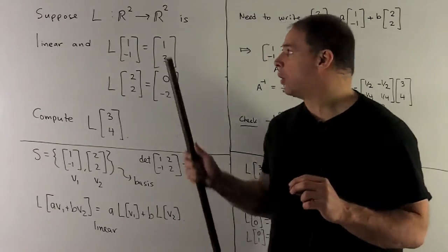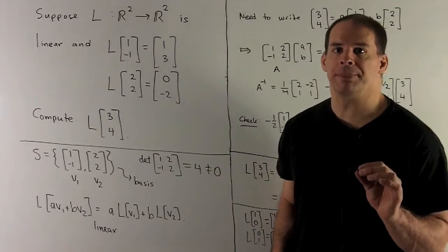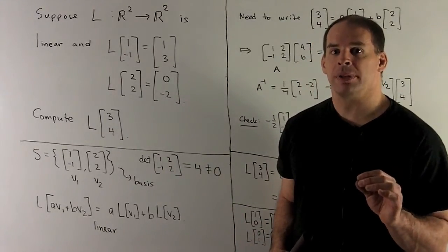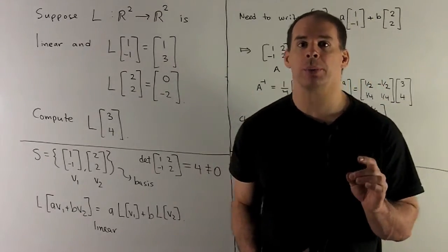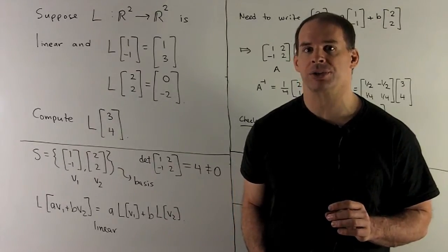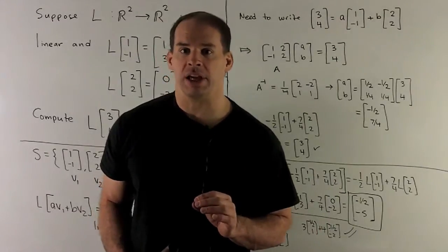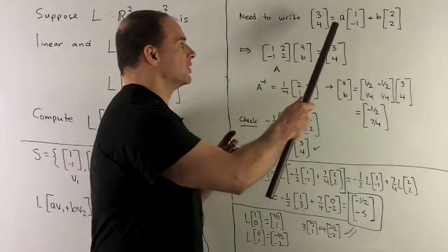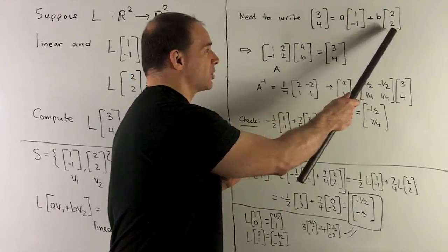If I take (1, −1) and (2, 2), put them in a matrix and take the determinant, I get 4. That's not equal to 0, so that means our two vectors are going to give us a basis of R², and I can write (3, 4) as a linear combination of those vectors. To do that, we just set up the linear combination equation: (3, 4) equals scalar times our first vector plus scalar times our second vector.